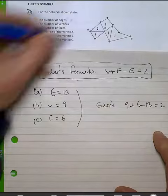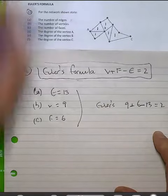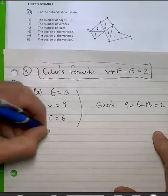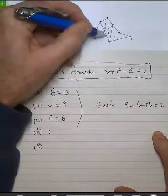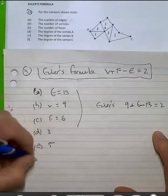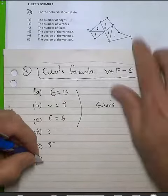Degree of vertex A is a connection of 3. Degree of vertex B: 1, 2, 3, 4, 5 is 5. And the degree of vertex C is 2.